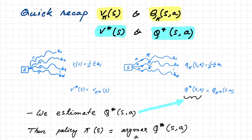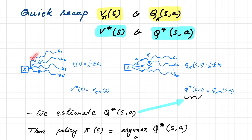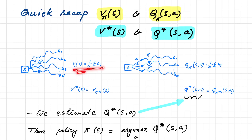Before going to the temporal difference learning algorithm, let's quickly recap what the value function is, what the Q-value function is, and what optimal value and optimal Q-value are. The value of a state is the expected return that we obtain if we apply policy pi from a state and draw some trajectories. If we are in state s and apply policy pi repeatedly from that state onwards, we get various returns. If we take the average of those returns, that is called the value of the state with respect to policy pi — though technically it is the expectation, which we estimate by averaging.